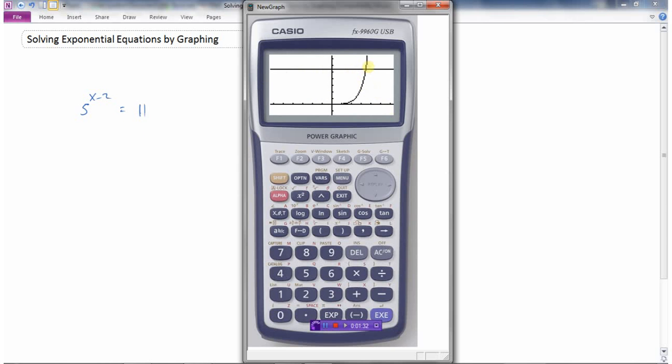And what I'm going to need to find here is the intersection point. So g solve, isct—I want to find the intersection point, and it's given me an x value and a y value.